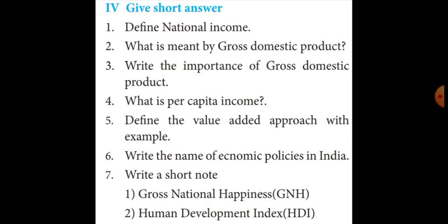Fourth question: what is per capita income? Page number 294, number 5 — per capita income. Per capita income or output per person is an indicator to show the living standard of people in a country. It is obtained by dividing the national income by the population of a country. Per capita income is equal to national income divided by population. That formula is very, very important — including the formula you have to write.